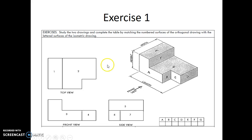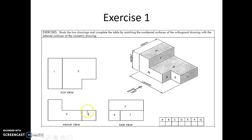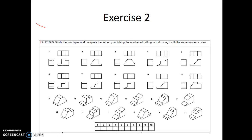Exercise 1 seen here. We have an object with different surfaces named with different letters. Here we have the third angle projection of the object with different views which are numbered. These views are of different surfaces on the object. Your exercise is to match the numbers to the letters. Let us proceed to the next exercise.